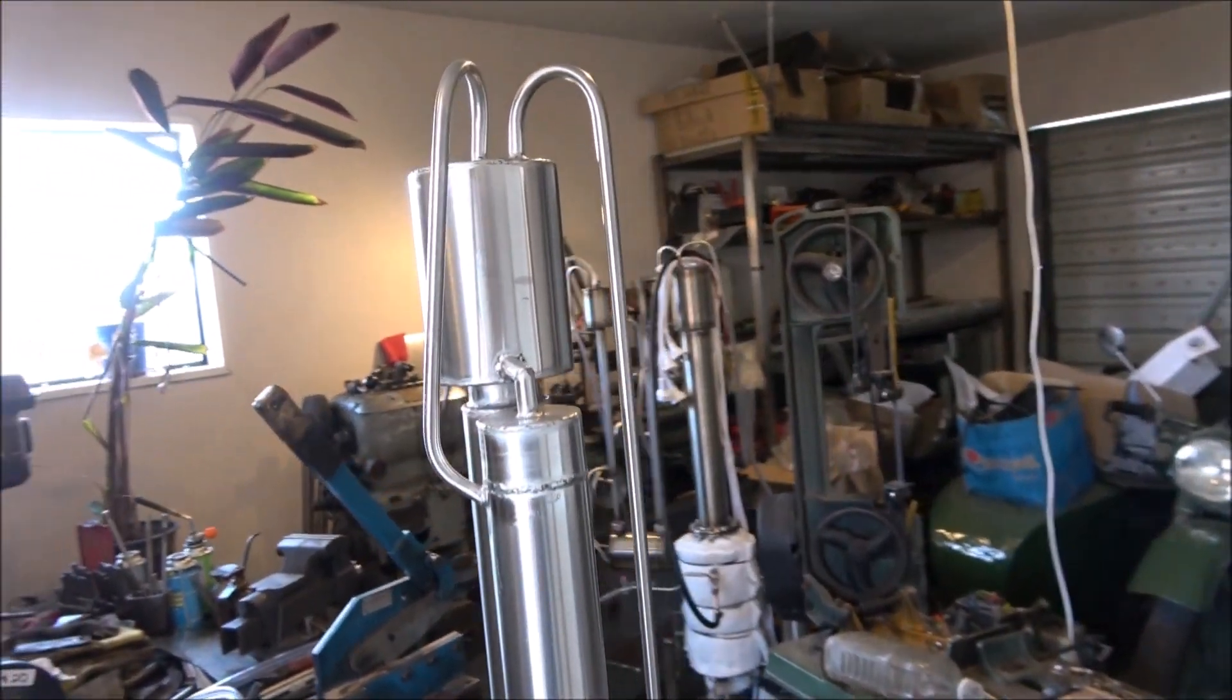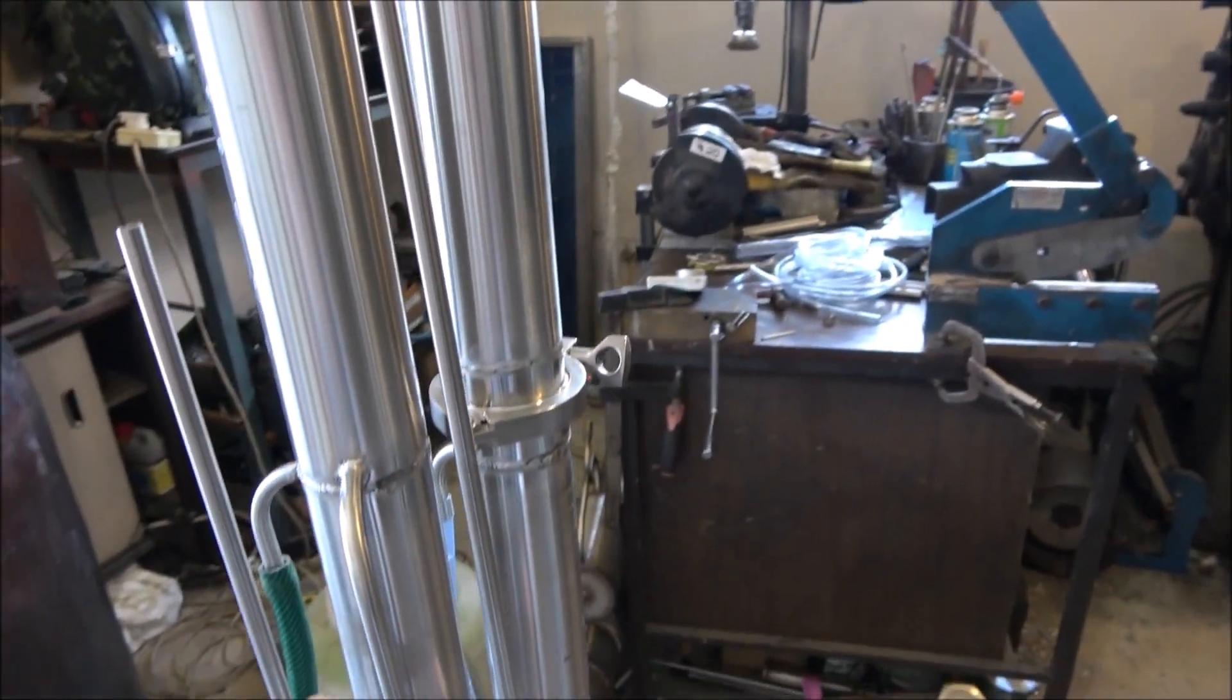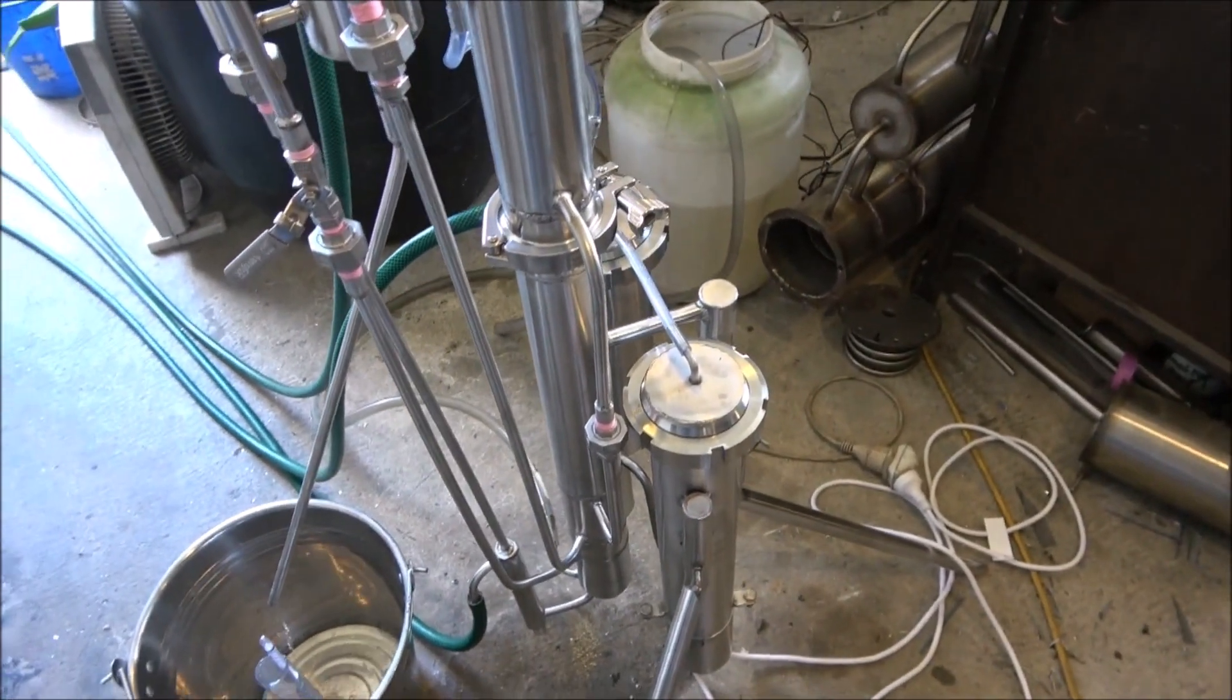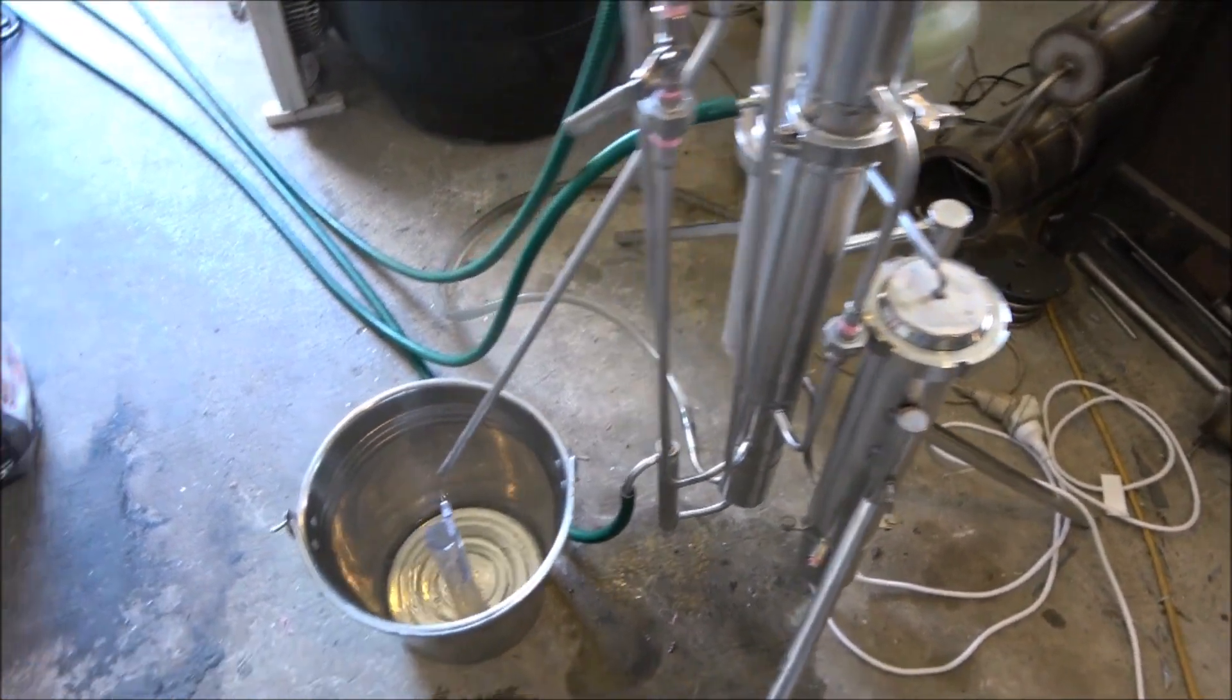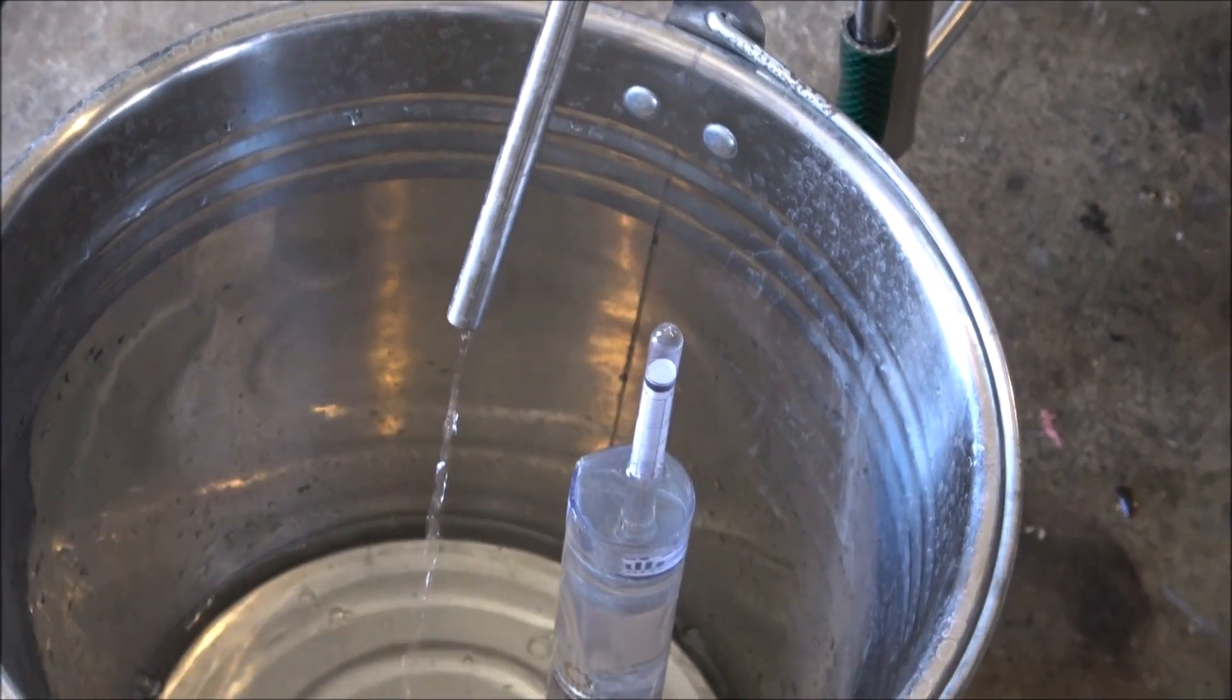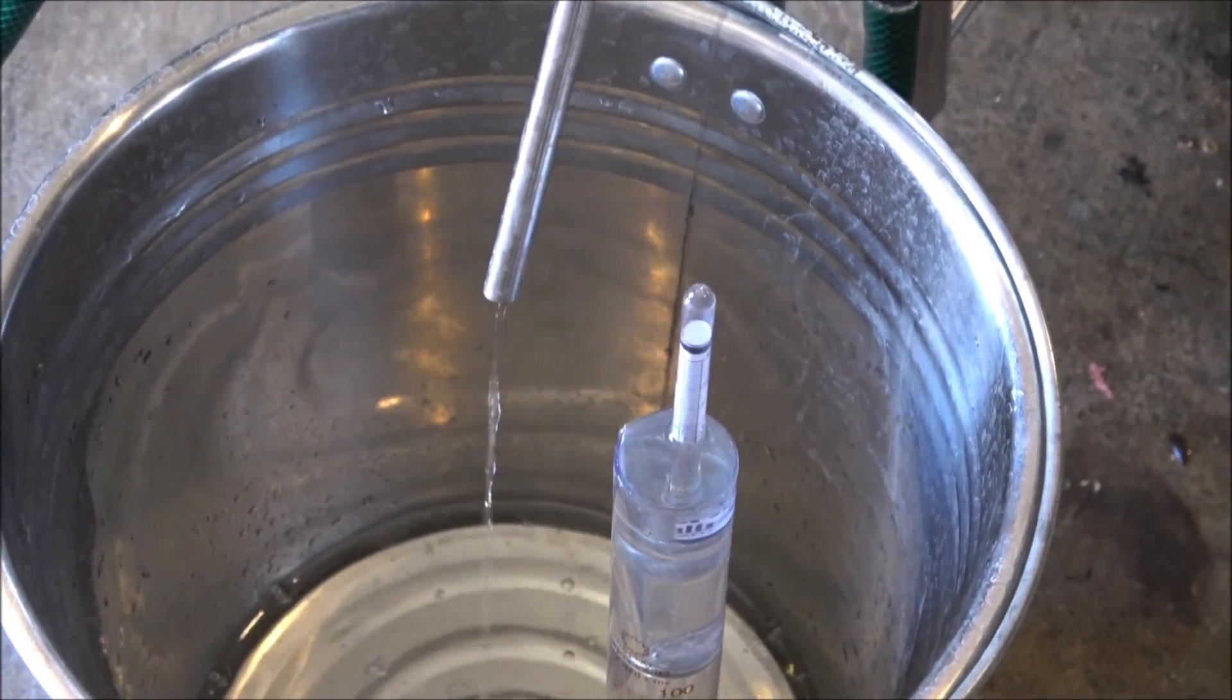So here's the still, it's about 165 centimeters high, I would say approximately 20 kg heavy, consumes 3 kilowatts of 220 volt per hour, and produces approximately 6 liters of distilled alcohol at 50% of alcohol content if you do have 10 to 12% wash.